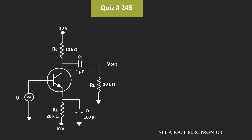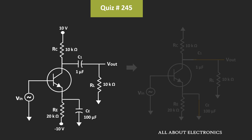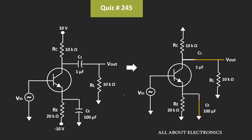For the small signal analysis, if we see the equivalent circuit, then it will look like this. Here, the coupling and bypass capacitors will act as a short circuit, while these DC voltage sources will also act as a short circuit. As this bypass capacitor gets short-circuited, effectively we can say that this emitter terminal is also short-circuited. That means this input voltage is connected between the base and the emitter, while this collector resistor is connected between the collector and the emitter terminal. And we can replace this transistor by the small signal model.